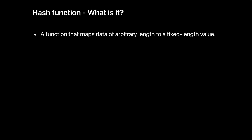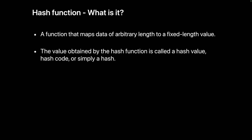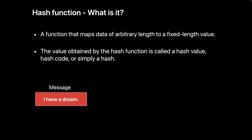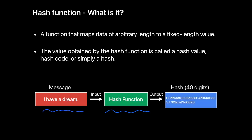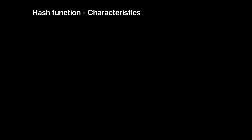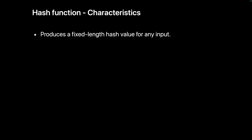A hash function maps a message of arbitrary length to a fixed-length data string. The value obtained from a hash function is called a hash value, hash code, or simply hash. For example, if we input the sentence 'I have a dream' into a hash function, we get a fixed-length arbitrary string as output. Here, we use a hash function that returns a 40-character result. Hash functions have several characteristics: first, a hash function always outputs a fixed-length hash value regardless of the input.